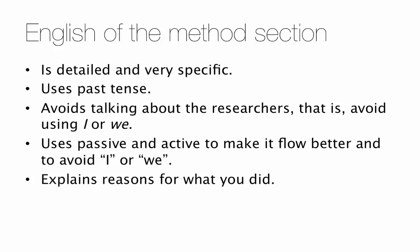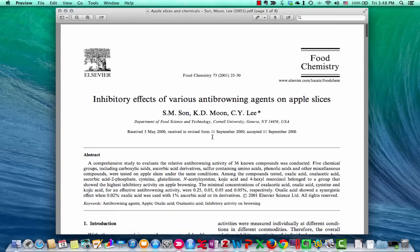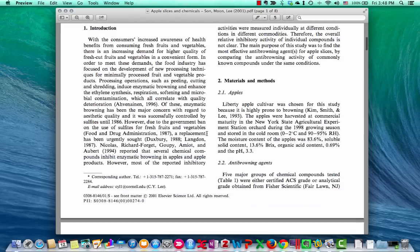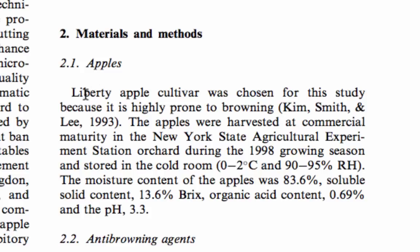In this video, we're going to go back to the Apple paper that we used in the last video and look at the language of it. Here's the Method section. First, we talk about the apples. 'Liberty Apple cultivar was chosen for this study.' This is an example — it's past tense and it's passive. If we didn't use passive, we'd have to say 'we chose Liberty Apple cultivar for this study,' but that makes 'we' the subject of the sentence instead of Liberty Apple cultivar.